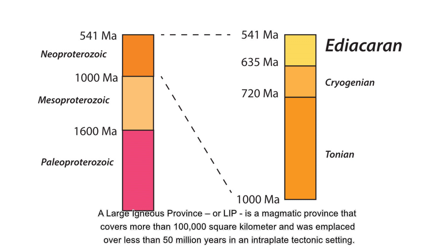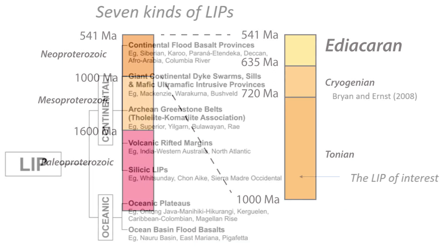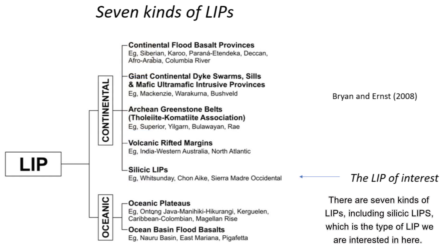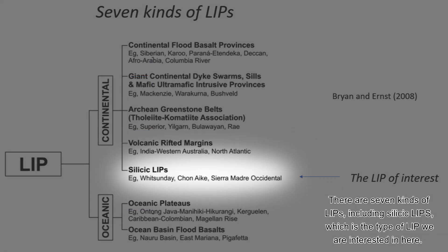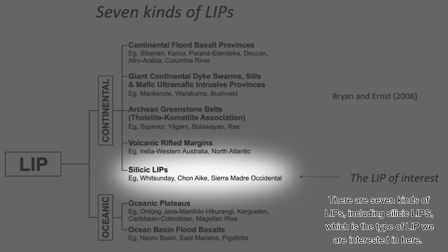A Large Igneous Province, or LIP, is a magmatic province that covers more than 100,000 square kilometers and was emplaced during less than 50 million years in an intraplate tectonic setting. There are seven kinds of LIPs, including silicic LIPs, which is the type of LIP we are interested in here.